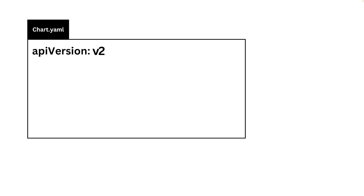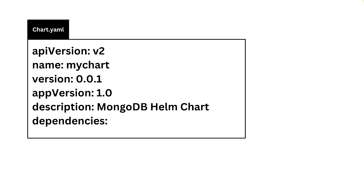Now let's do a deep dive into chart.yaml. It contains the API version, which indicates the Helm version — v1 means Helm 2, v2 means Helm 3. Then you have the name of the chart, and the chart version — don't mistake this for the application version itself. The app version is your application or service version. You can also have an optional description.